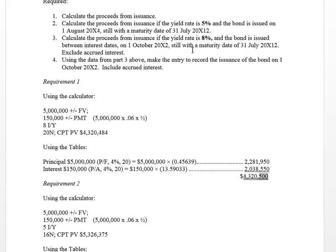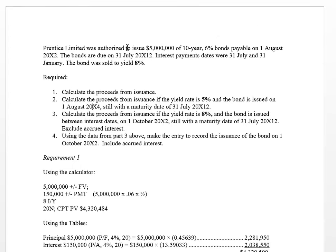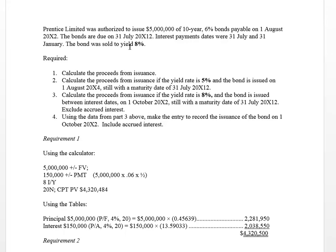In requirement 2, we changed things on you a little bit — assume the yield is not 8% but 5.5%. They want you to assume the bond was issued on August 1st, X4, not August 1st, X2 as we did in requirement 1. This is where the question becomes a little bit tricky, because now after the bond was issued initially at August 1st, X2, the next interest payment would have been made January 31st, X3, and then July 31st, X3.